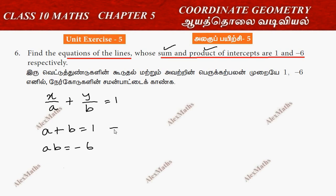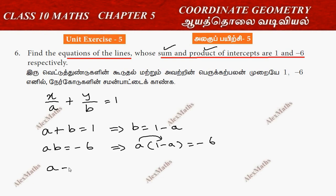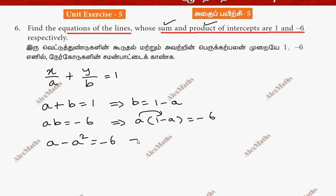So a plus b equal to 1, which gives b equal to 1 minus a. Substituting into the product: a into b equals a into (1 minus a). This gives the quadratic equation a minus a squared equal to minus 6, so a squared minus a minus 6 equal to 0.